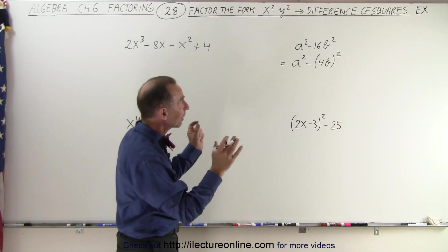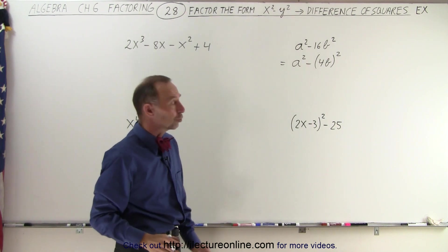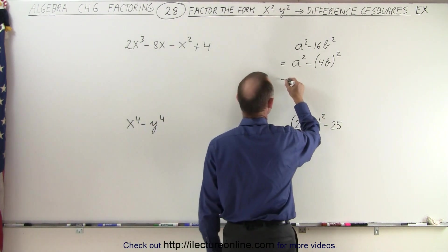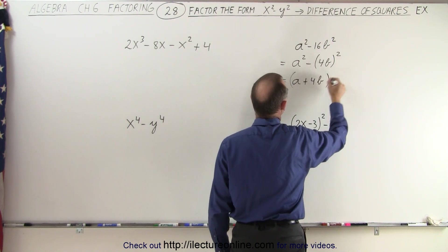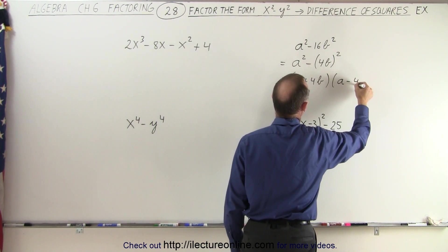It's the same thing, but now clearly you have the difference of two squares, which can then be factored as a plus 4b times a minus 4b.